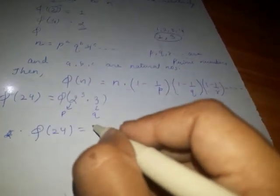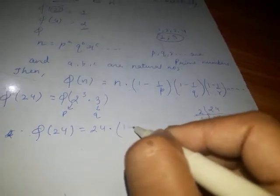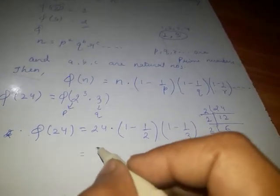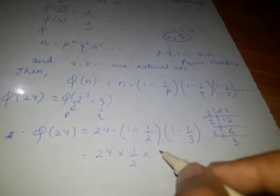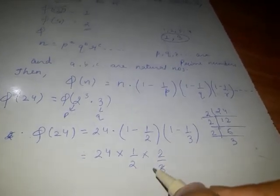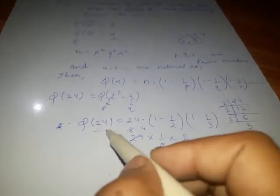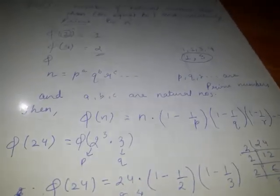So we can use the formula: phi 24 equals 24 times 1 minus 1 upon 2, 1 minus 1 upon 3, which is 1 upon 2, 2 upon 3. So 3 goes 8 times and 2 goes 4 times, means there are total 8 numbers which are relatively prime to 24 and less than 24. So this is all about Euler's phi function.